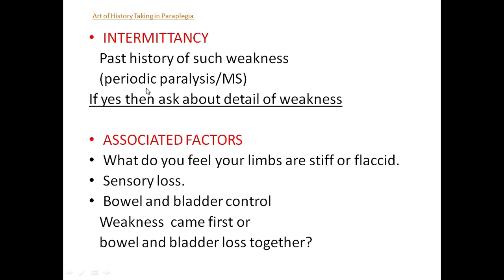Then comes intermittency. Ask about a past history of such weakness. By asking this question you will rule out periodic paralysis and multiple sclerosis. If the patient says yes, they had weakness in the past, ask: when this weakness developed, was there any residual weakness, or if it resolved, over what period of time did it resolve?